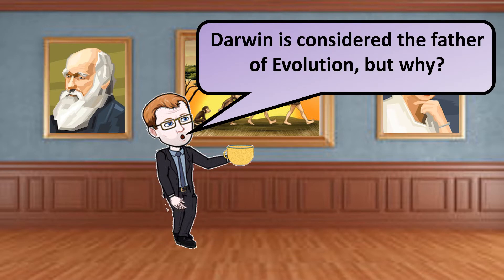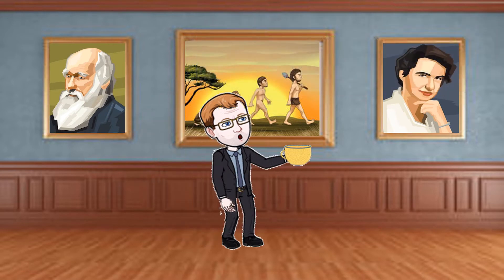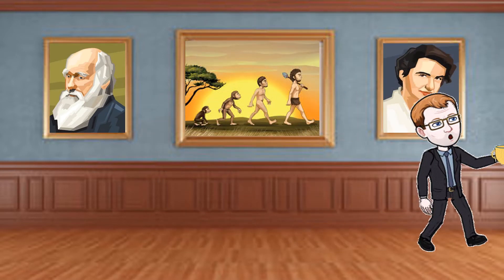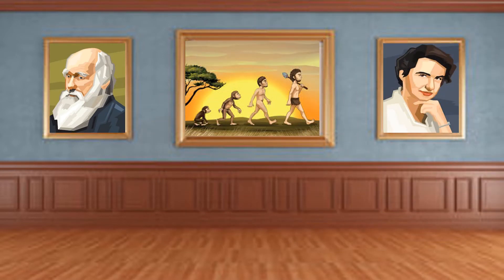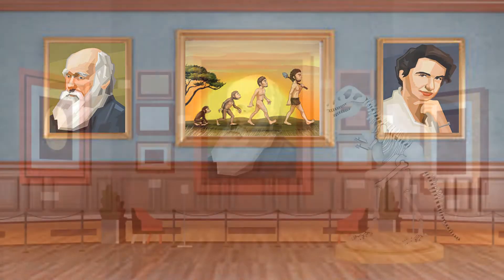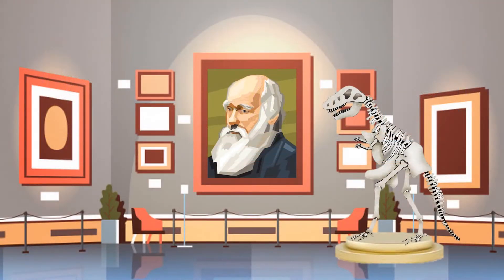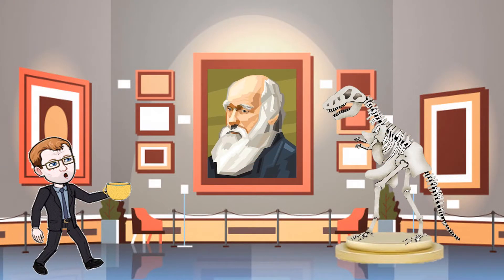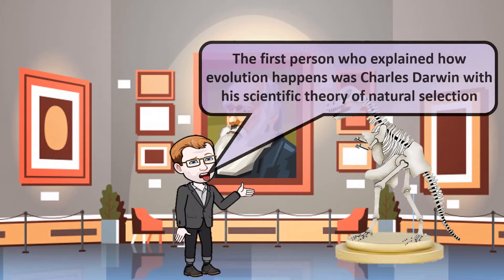Darwin is considered to be the father of evolution, but why? The first person who explained how evolution happens was Darwin, with his scientific theory of natural selection.